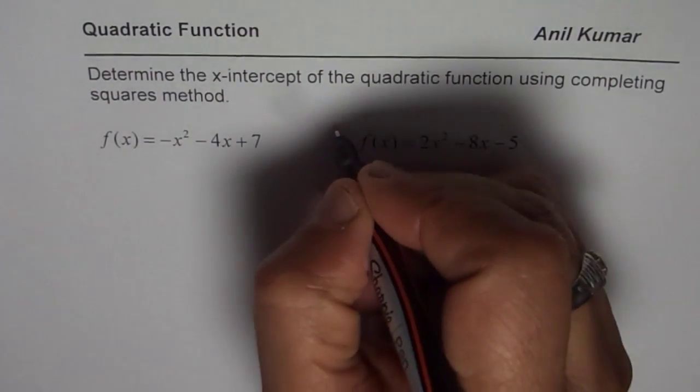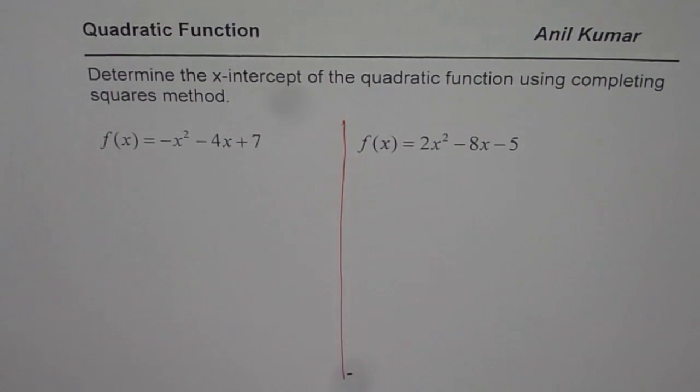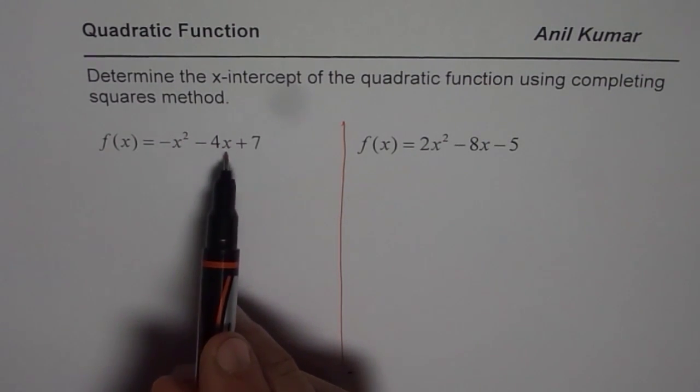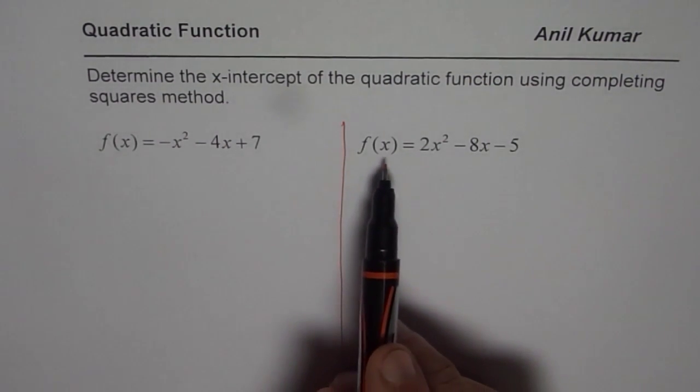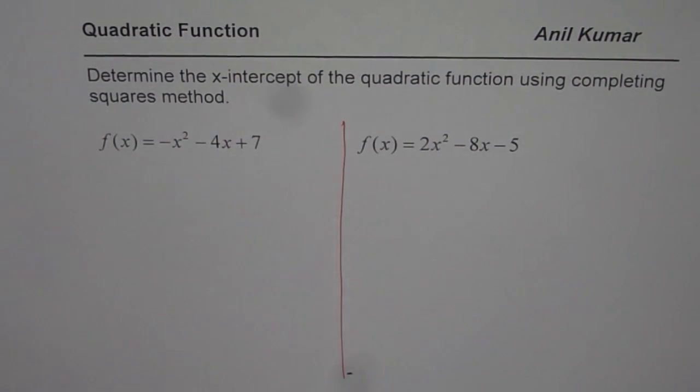So I will show you an example, I will actually do two questions in this video. Well they are slightly different but yes, is reviewing completing the squares method itself. First equation is, f(x) = -x² - 4x + 7. The other one is, f(x) = 2x² - 8x - 5.